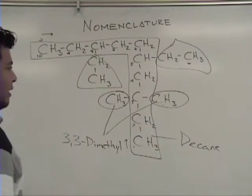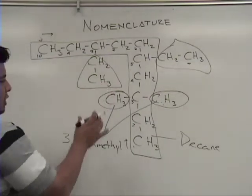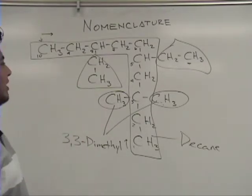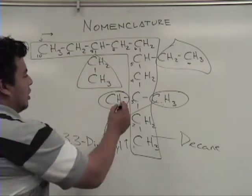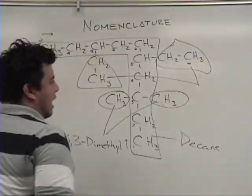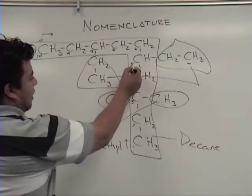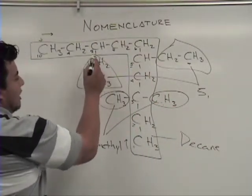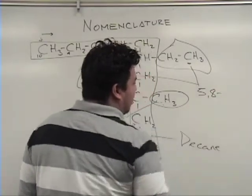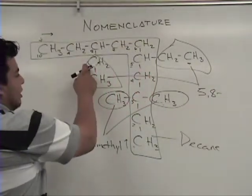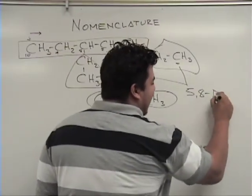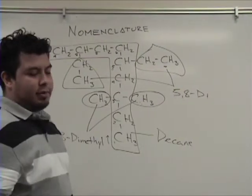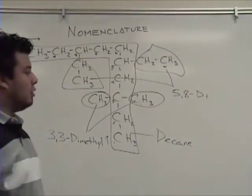Now let's take the other shape — we have a two-carbon substituent, so that should be an ethyl. We know one is on carbon five, so we write five. Then we know the next one is on carbon eight, so we write eight. Then we name it: since there are two, we start with di, and we know two-carbon substituents are ethyl — so diethyl.